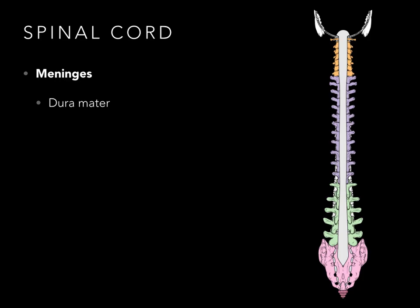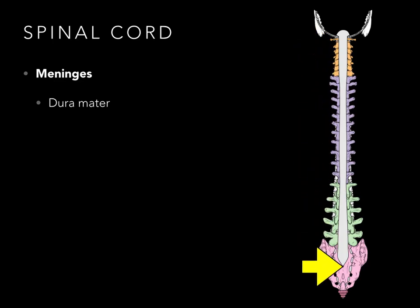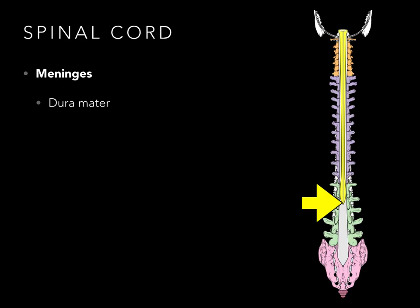Let's look at this vertebral column. You can see in orange the cervical, purple the thoracic, green the lumbar, and pink the sacral vertebrae. The dura mater courses all the way from the top to the bottom. However, the spinal cord ends between the L1 and L2 level. So the spinal cord goes down to L1–L2, but the dura mater goes all the way down to the bottom.